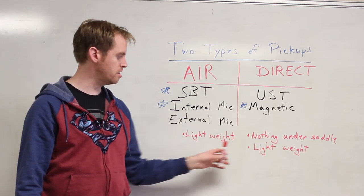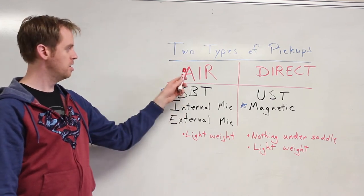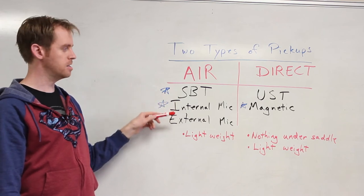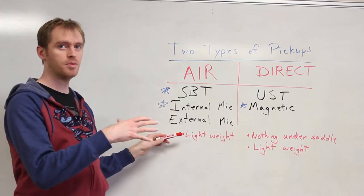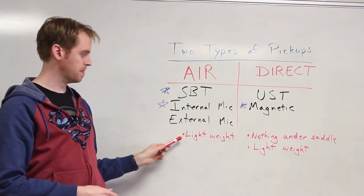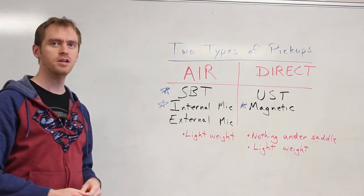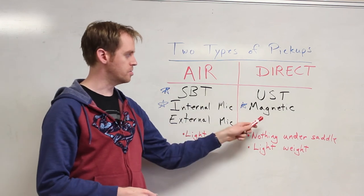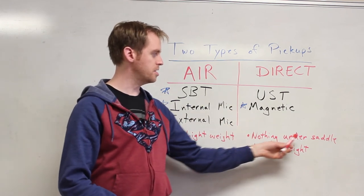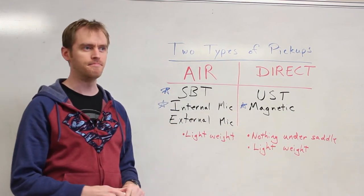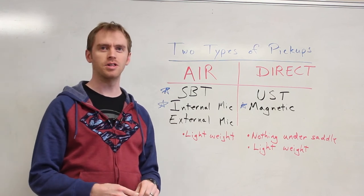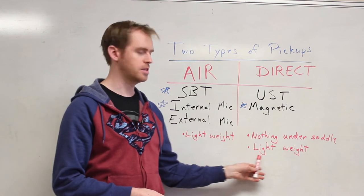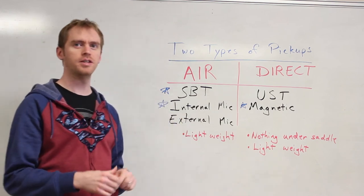I just wrote down here kind of the main reminders for each one. If you're using a soundboard transducer or anything you're adding, especially to the top of the guitar, keep it really lightweight, as light as you can so you're not changing that resonant frequency. And then for the direct ones, nothing under the saddle. You just lose a lot from that. And then, again, keep it lightweight. Keep things light on the top.